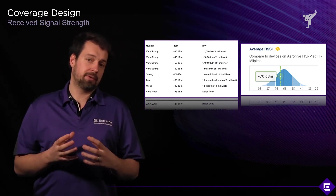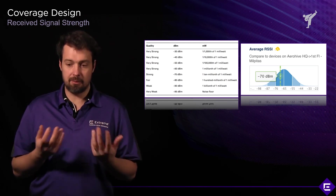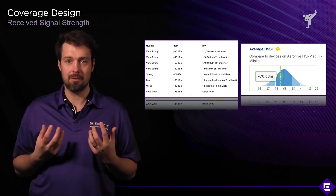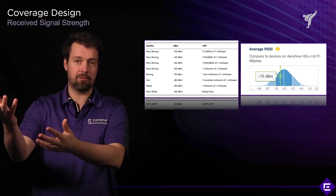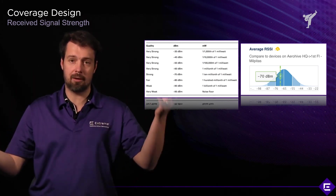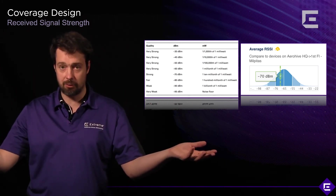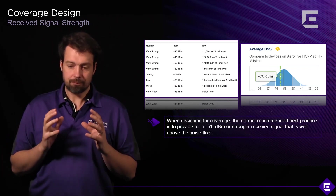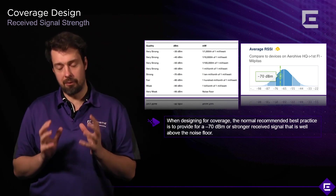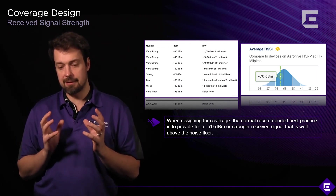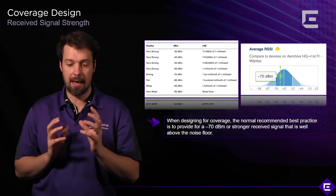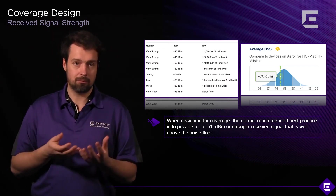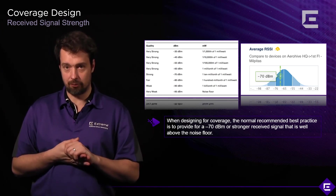RSSI simply measures how much RF power a device is receiving from another device — normally a client station and an access point. When designing for coverage, the recommended best practice is to provide at least negative 70 dBm, or stronger RSSI, to be able to support devices on that floor. A received signal of negative 70 dBm is considered to be good quality signal.